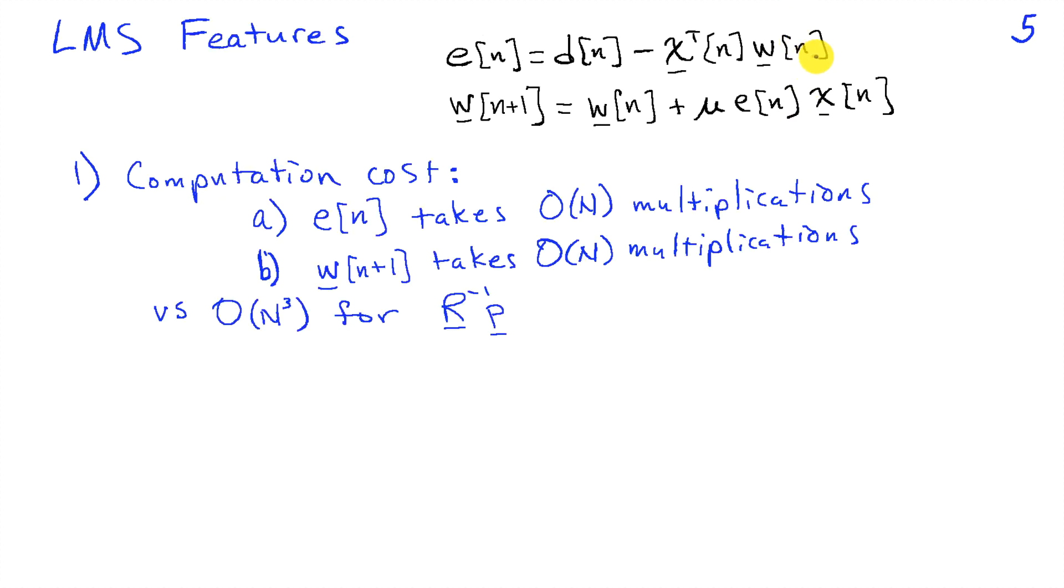Now let's look at some of the features of this algorithm, which I've illustrated by first putting the two equations that we update at the top here. With respect to computational cost, in order to compute e of n, the dominant effect is that I've got to do this inner product between x and w. Well, those are each N dimensional vectors, so this takes on the order of capital N multiplications. Now to update w to the next time step or the next iteration, the main computation I have to do is multiply e of n times the vector x of n. And x is also N dimensional again, so this means multiplying e into N elements of x, that's another order N multiplications.